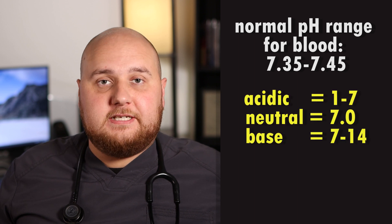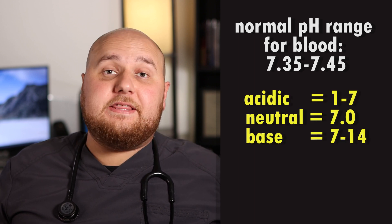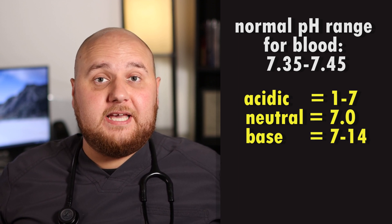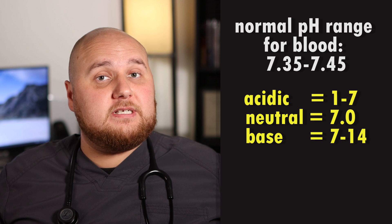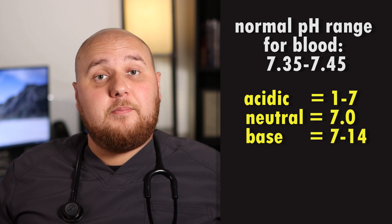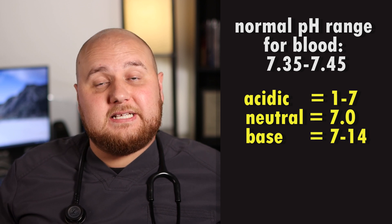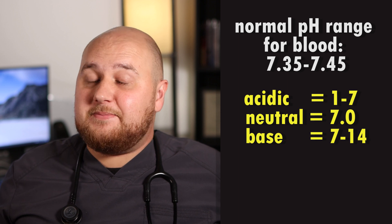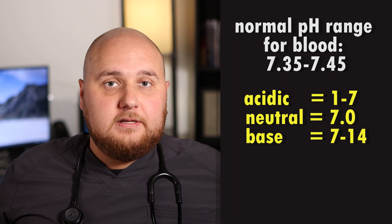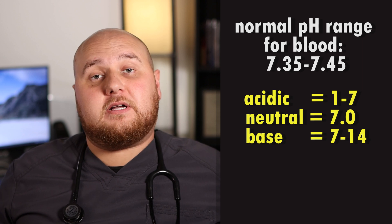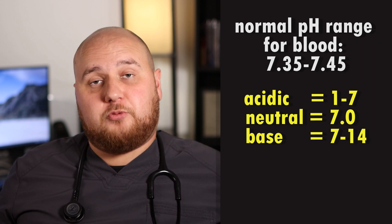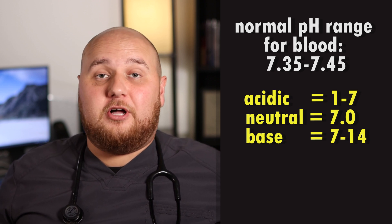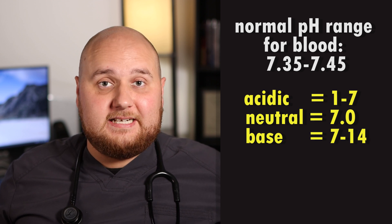The scale itself is between 1 to 14, with 7 being neutral. Anything lower than 7 is going to be more acidic, and the lower it gets, the more acidic it is. So something with a pH of 1 is way more acidic than a pH of 5. On the opposite end, anything higher than 7 is going to be more base or alkaline. Something that's 14 is way more alkaline than something that's 8. Bleach is around 11 to 12, and stomach acid is around 1 to 2, so soda is very close in nature to stomach acid on the acidity level.